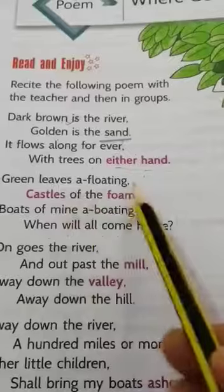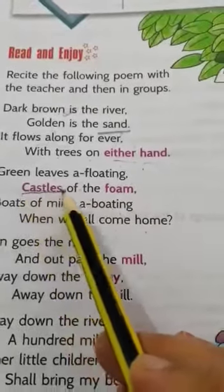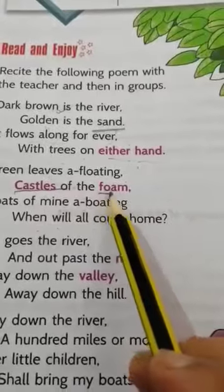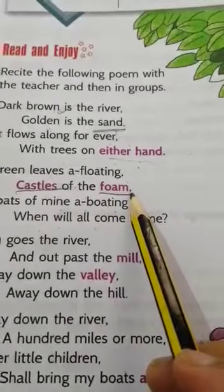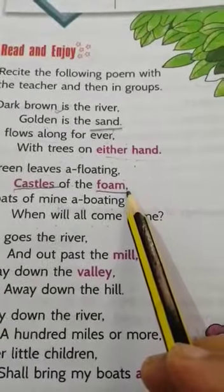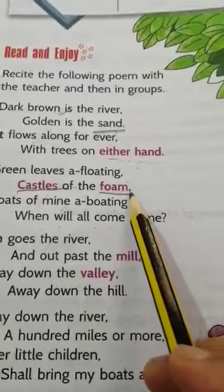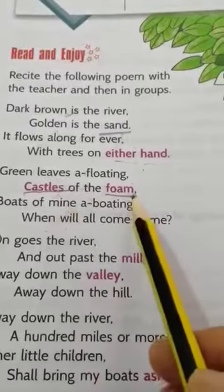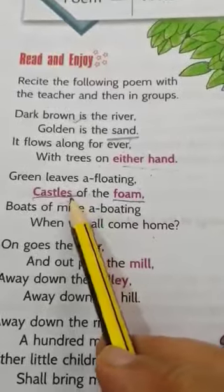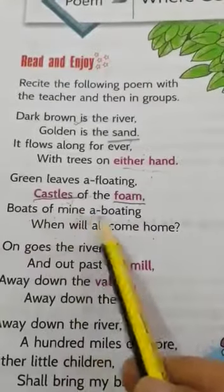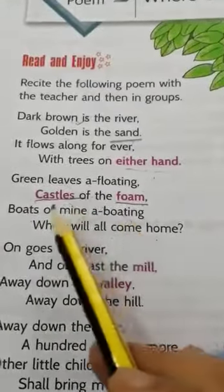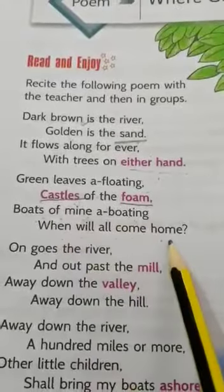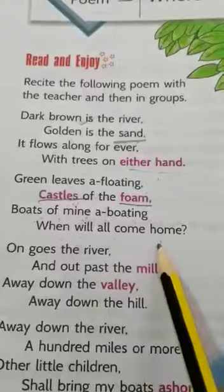Castles of the foam — 'castle' means a fort. The foam of the water forms shapes like a castle. Boats of mine are boating — the boat is flowing. When will all come home? That is, when will they return home?